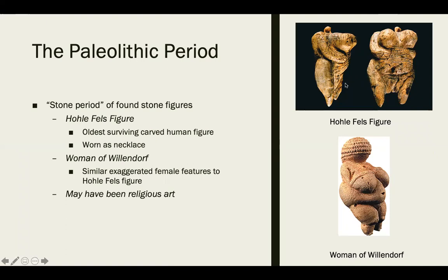We start to see a lot of these little women body vessel structures early on. We can assume they were made for a religious or symbolic purpose — such as being a symbol for fertility, power, or luck. This is the Woman of Willendorf, who is a little bit further along than the Halls Fells figure. This is probably the more recognized little figurine sculpture from the stone period that we have. She has similar female features with similar exaggerations.